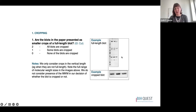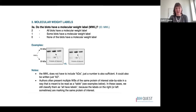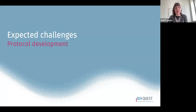Here's another example for molecular weight labels. The question is: do the blots have a molecular weight label? Options are: all blots have this, some blots have a label, or no blots have a label. Clarifications note that the molecular weight label does not need to include 'kilodaltons' — just the number is sufficient. And if authors present multiple blots with the same protein of interest side by side in a way that's meant to be read as a table, then you classify it as having all labels. There are additional examples of this in the full protocol.